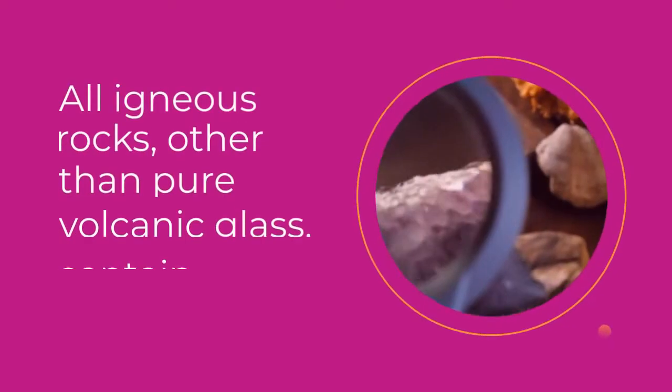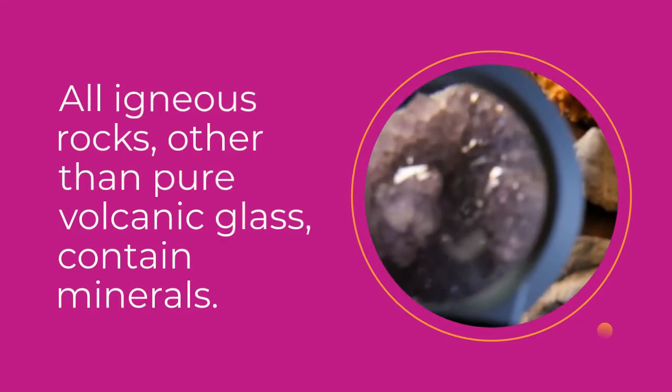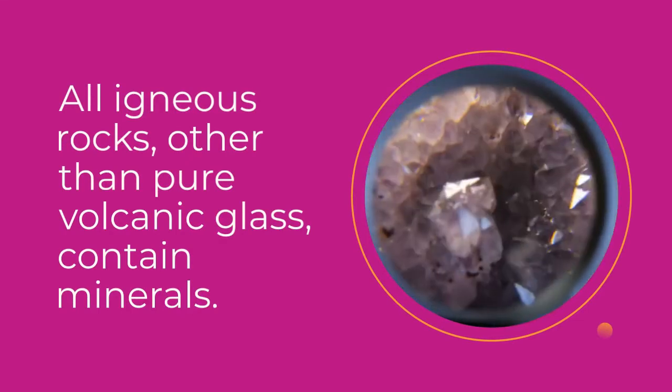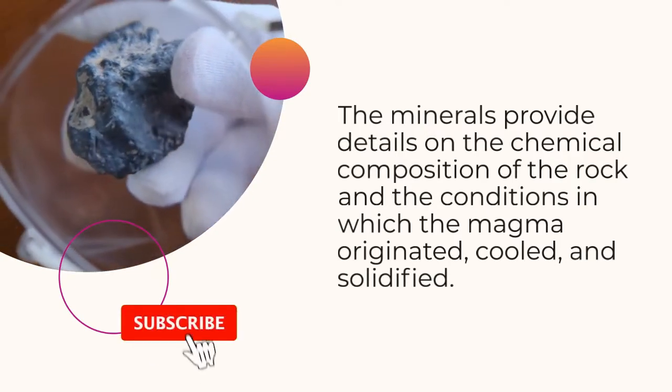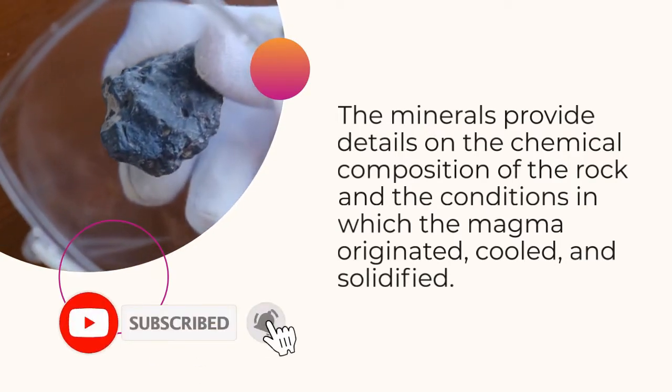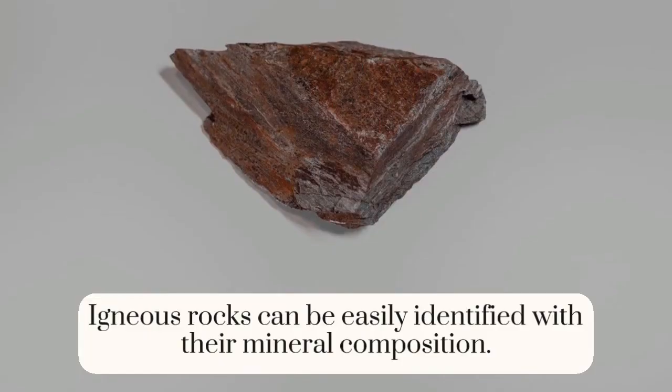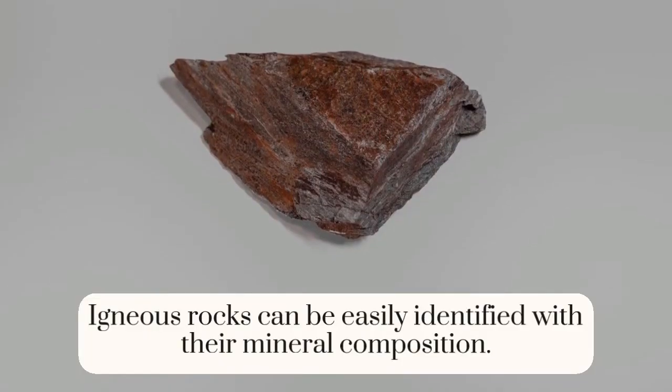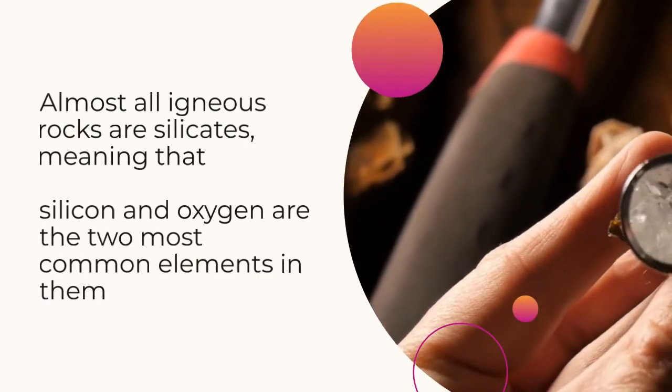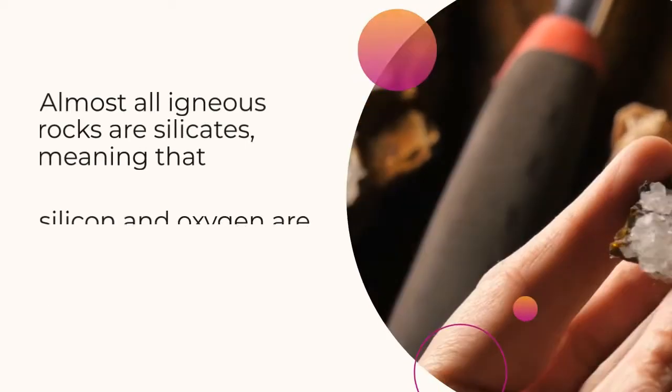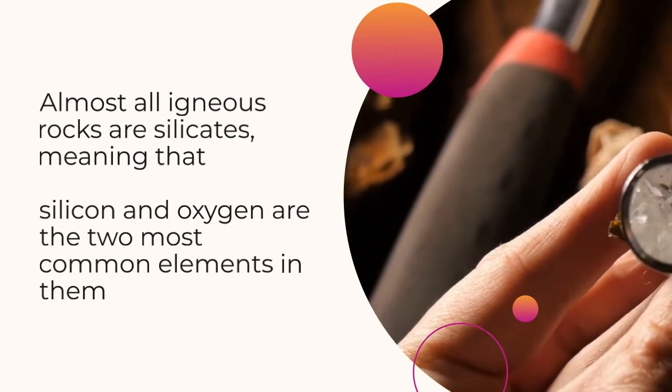Minerals. All igneous rocks, other than pure volcanic glass, contain minerals. The minerals provide details on the chemical composition of the rock and the conditions in which the magma originated, cooled, and solidified. Igneous rocks can be easily identified with their mineral composition. Almost all igneous rocks are silicates, meaning that silicon and oxygen are the two most common elements in them.